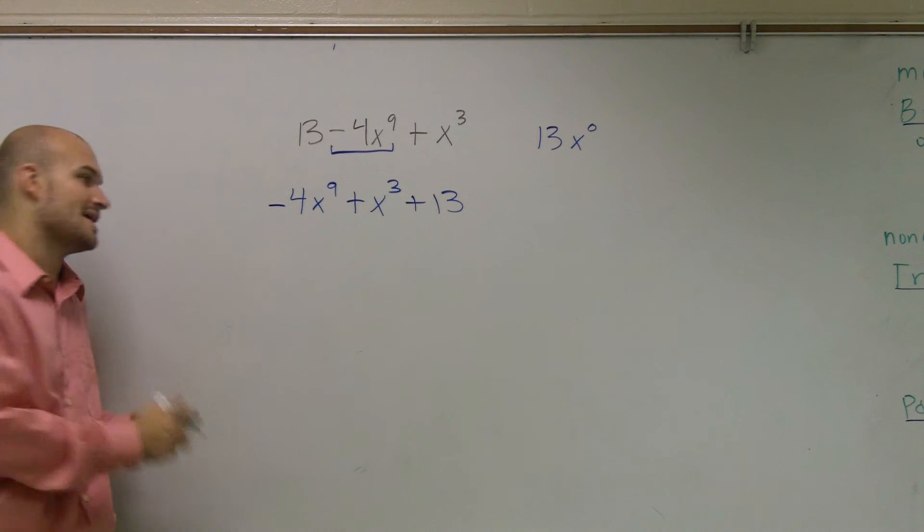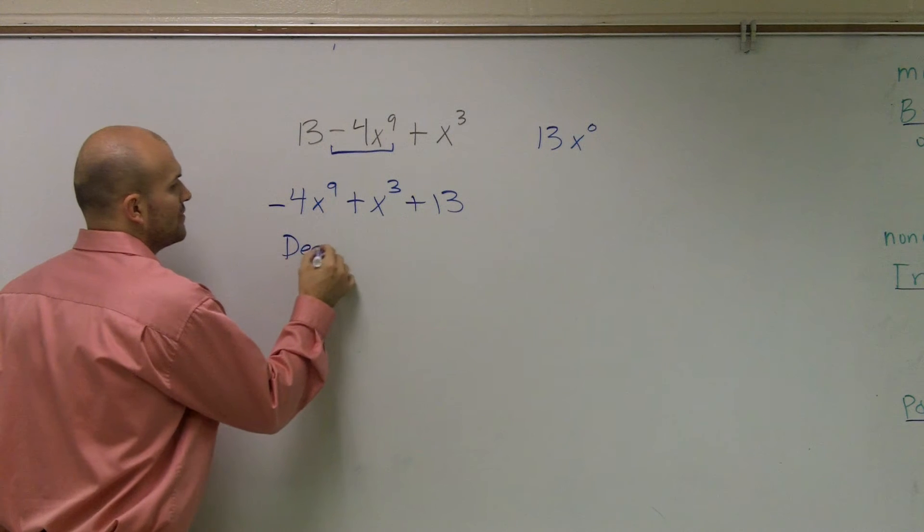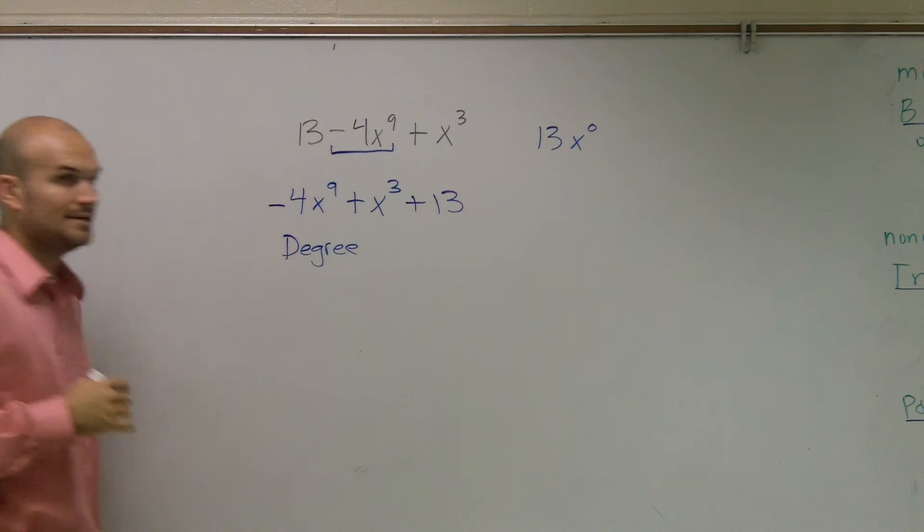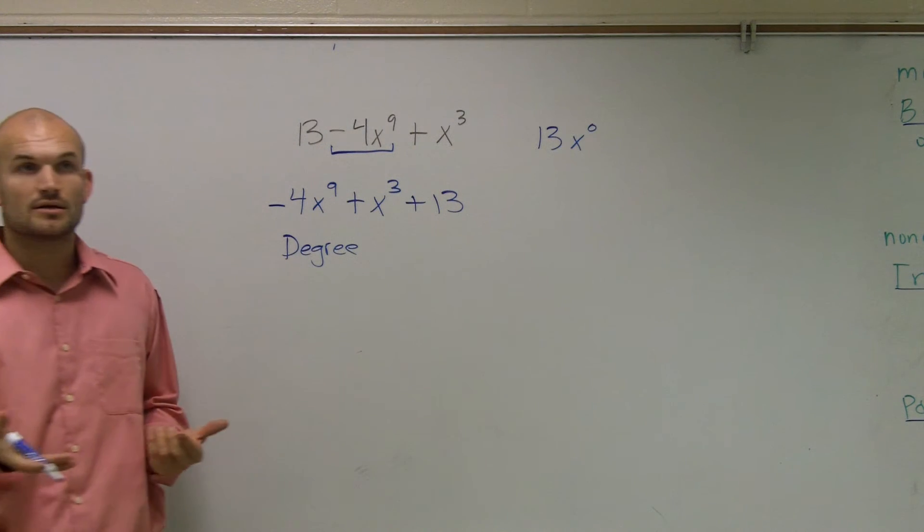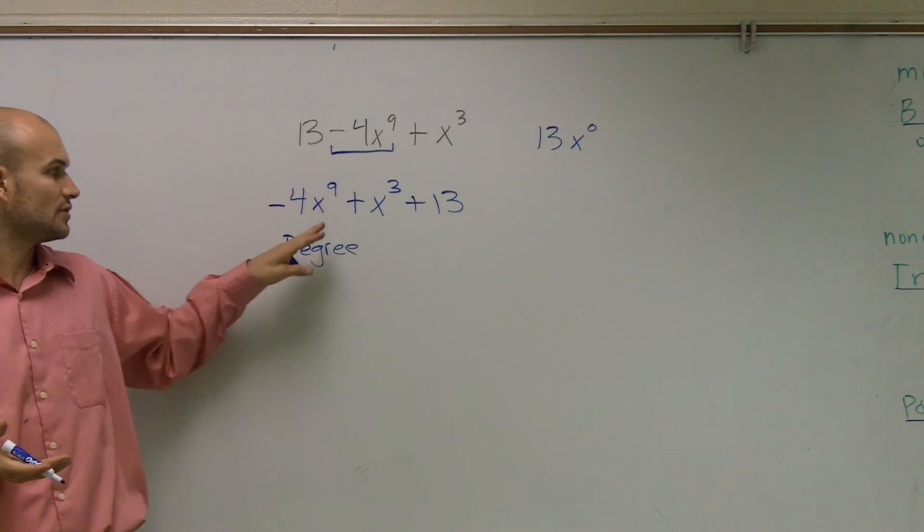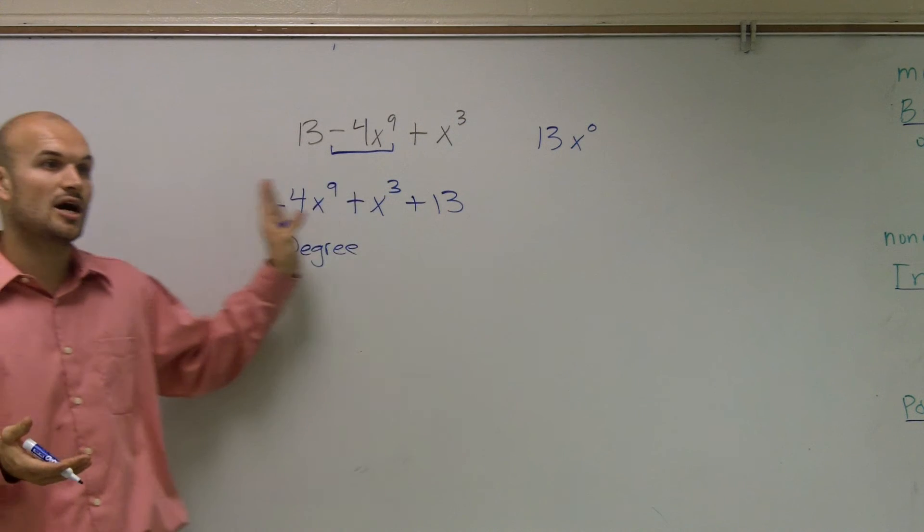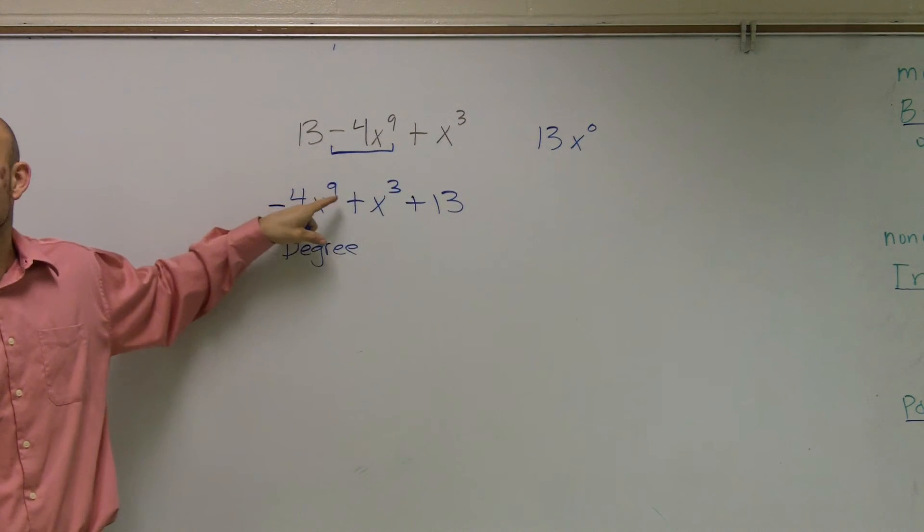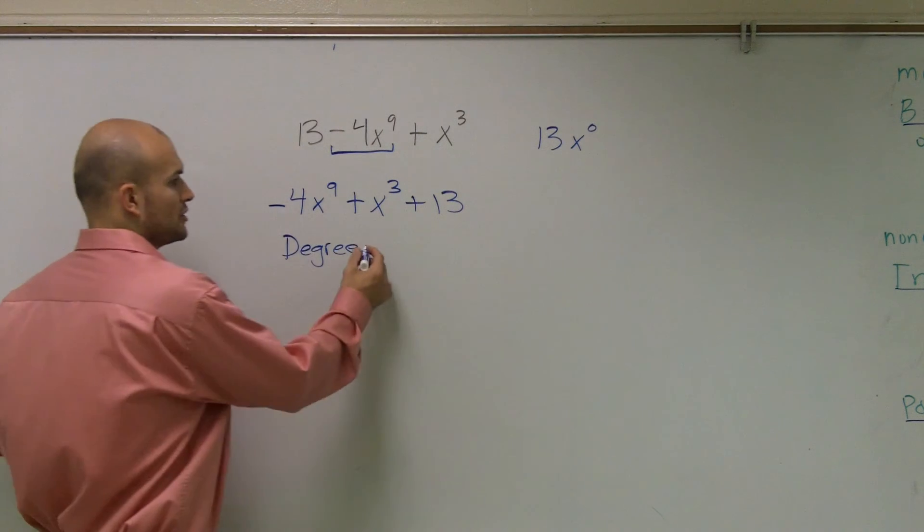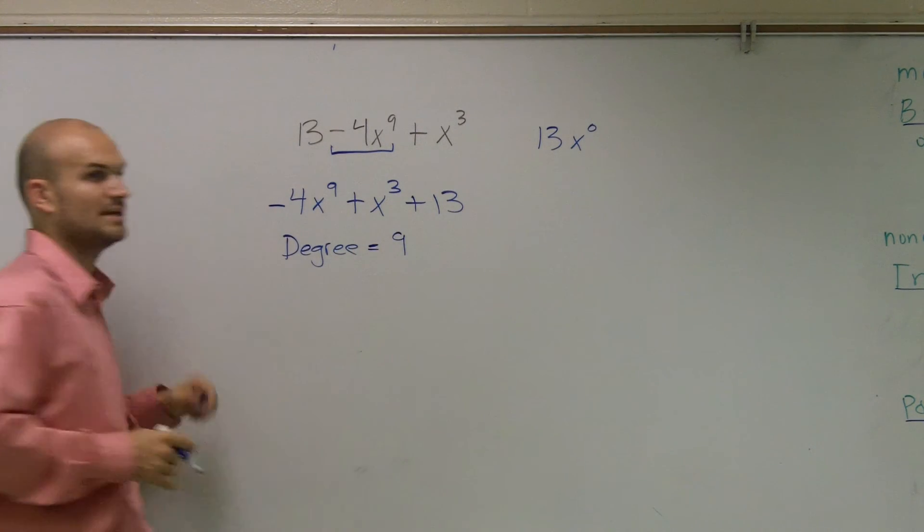Now we need to find the degree and leading coefficient. The degree of the polynomial is the largest exponent of the leading term. Since we arranged it in descending order, the largest is in front, which is 9. So the degree is 9.